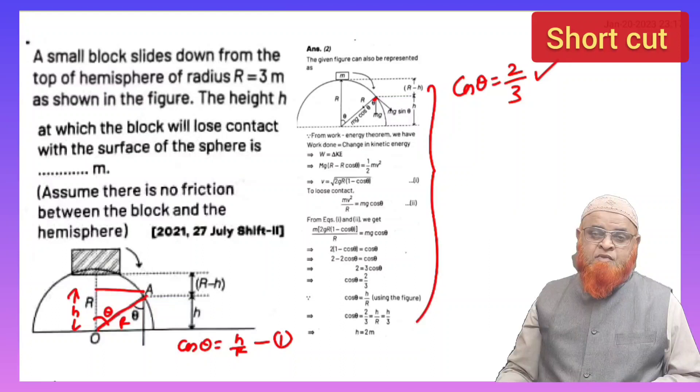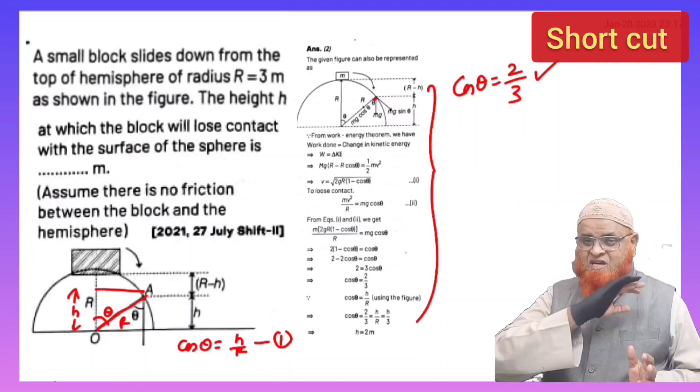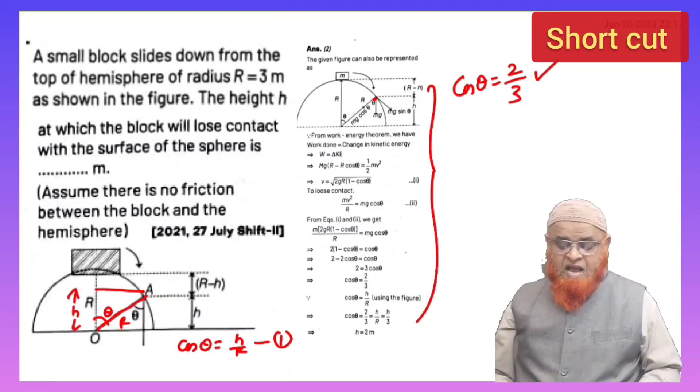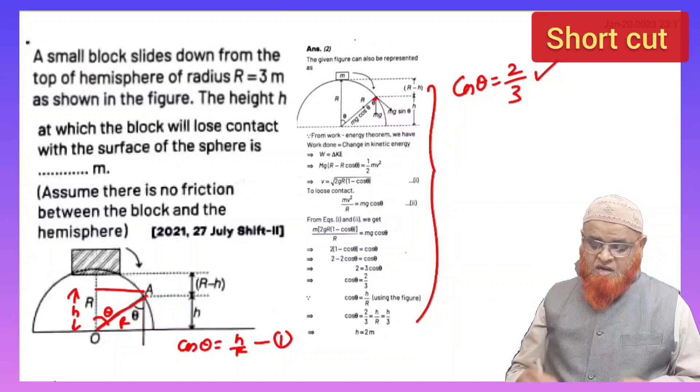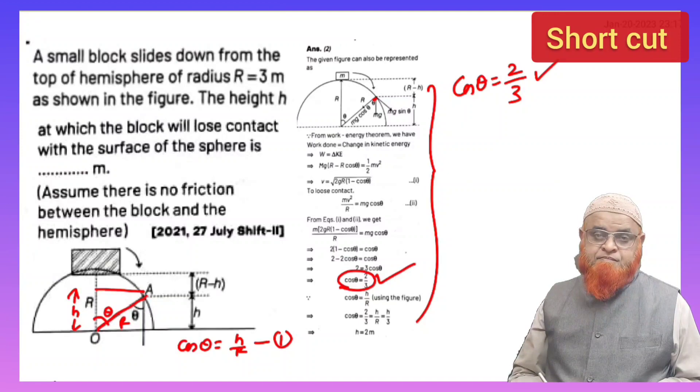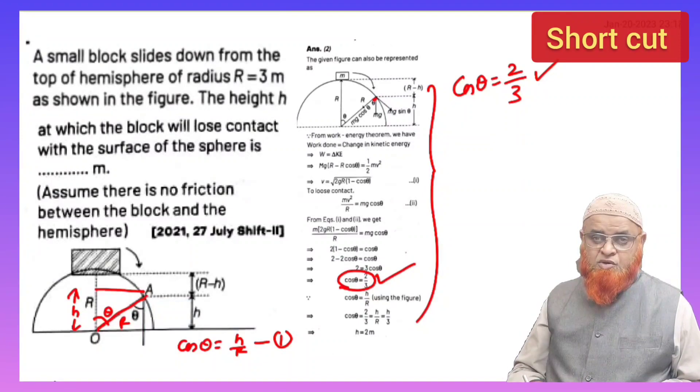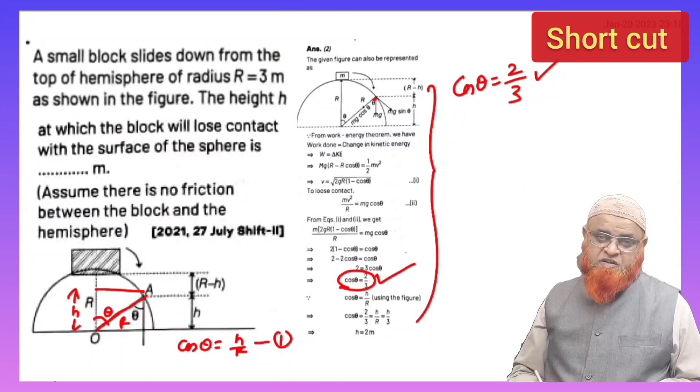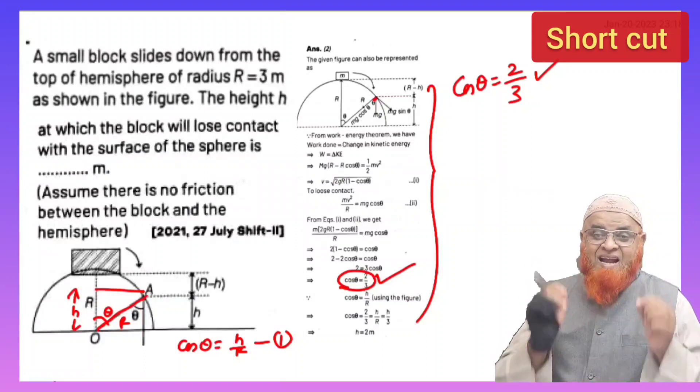For a hemispherical bowl when the block is dropped, that means I am telling you one shortcut that you just remember this value directly. From the total solution, just cos 2 by 3 - cos θ is equal to 2 by 3.